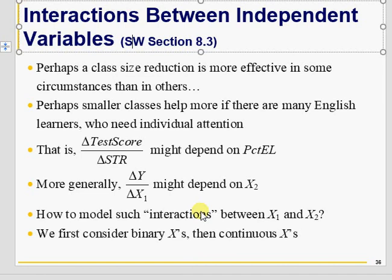You can have independent variable interactions as: binary and binary, binary and continuous, or continuous and continuous. In binary-binary interaction, there is change only in intercepts. In binary-continuous, you will have a slope change. And in continuous-continuous, you have the same intercept but different slopes. So let's see that.